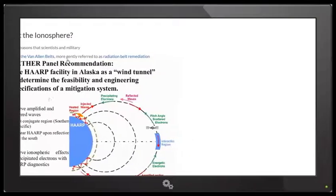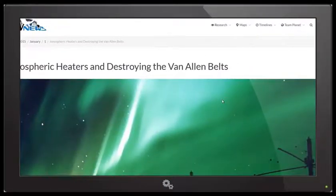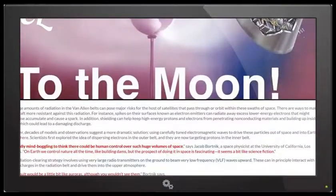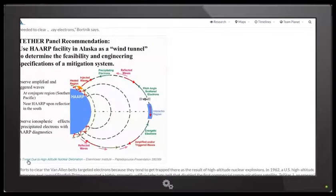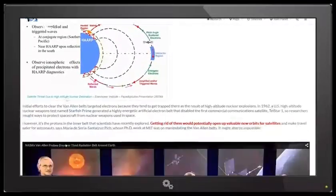So what you got here is ionosphere heaters are destroying the Van Allen Belts. And you scroll down through this. And right here, once again, tether panel. Satellite threat due to high altitude nuclear detonation. That's why they're doing it.